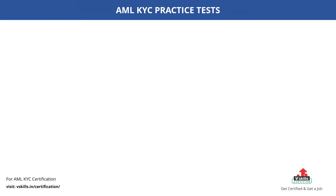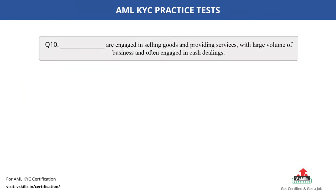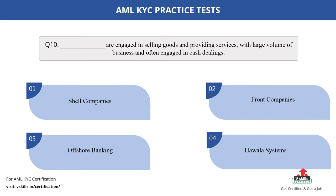Question number 10. Dash are engaged in selling goods and providing services with large volume of business and often engaged in cash dealings. Fill in the blank. The options are: A. Shell companies; B. Front companies; C. Offshore banking; D. Poala systems. The correct answer is option B.